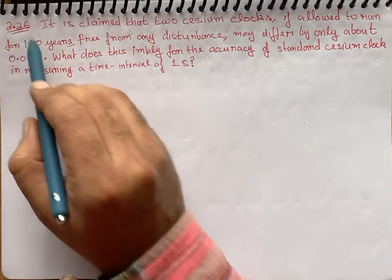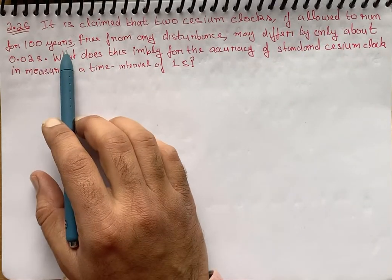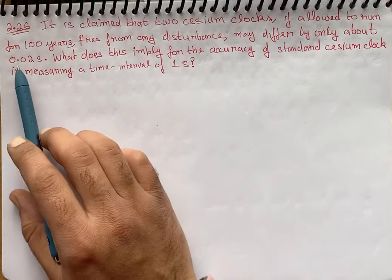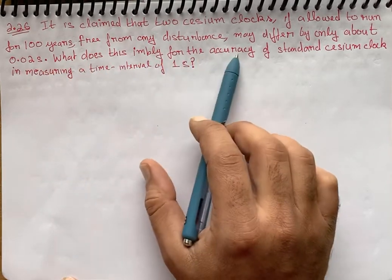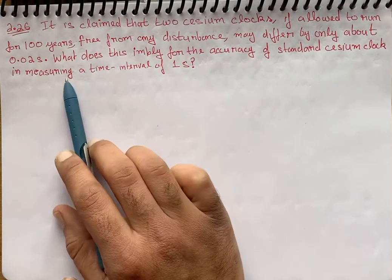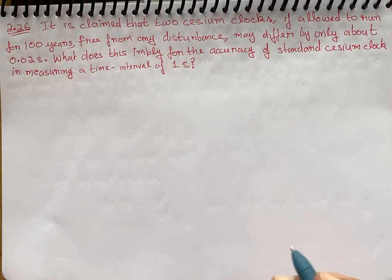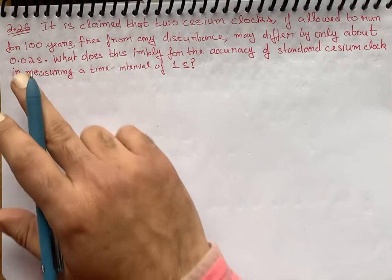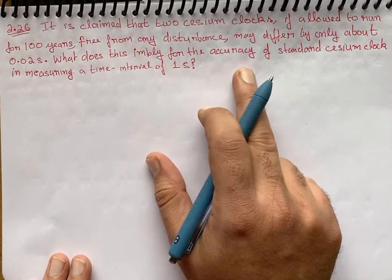Problem number 2.26: It is claimed that two cesium clocks, if allowed to run for 100 years free from any disturbance, may differ by only about 0.02 seconds. What does this imply for the accuracy of a standard cesium clock in measuring a time interval of one second?